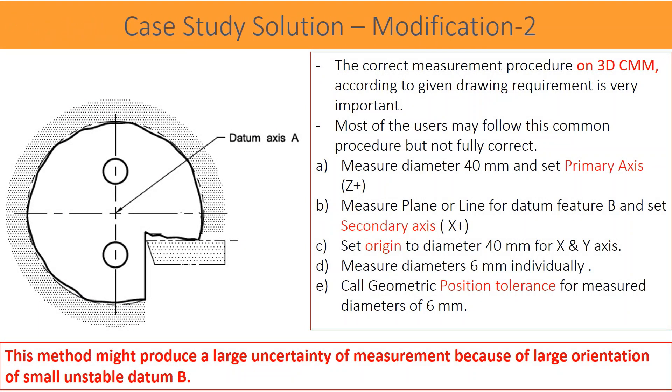The correct measurement procedure on 3D CMM according to given drawing requirement is very important. Most of the users may follow this common procedure but not fully correct: measure diameter 40 mm and set primary axis X plus Z plus, measure plane or line for datum feature B and set secondary axis X plus, set origin to diameter 40 millimeters for X and Y axis, measure diameters 6 millimeters individually, call geometric position tolerance for measured diameters of 6 millimeters. This method might produce a large uncertainty of measurement because of large orientation of small unstable datum B.